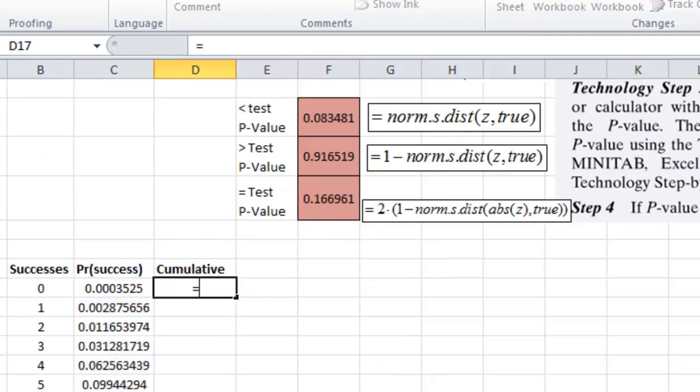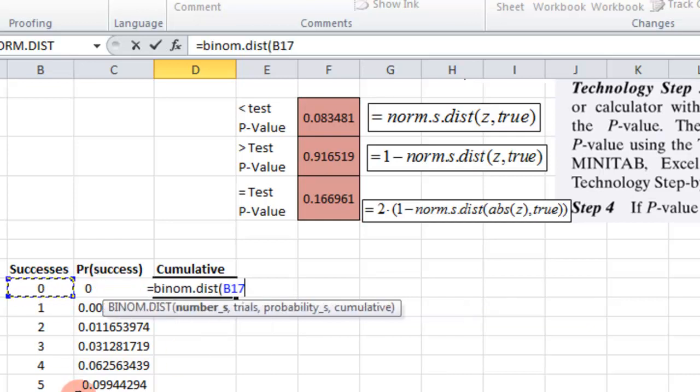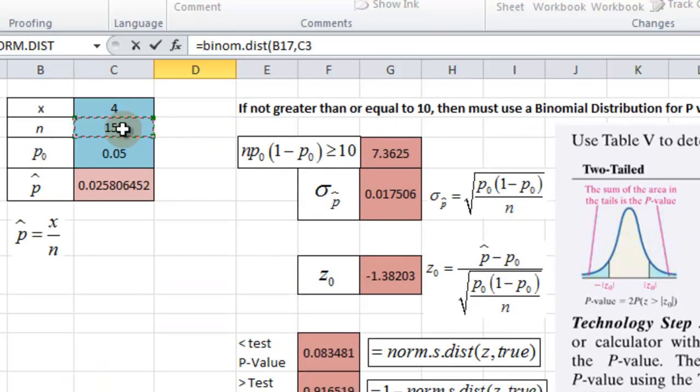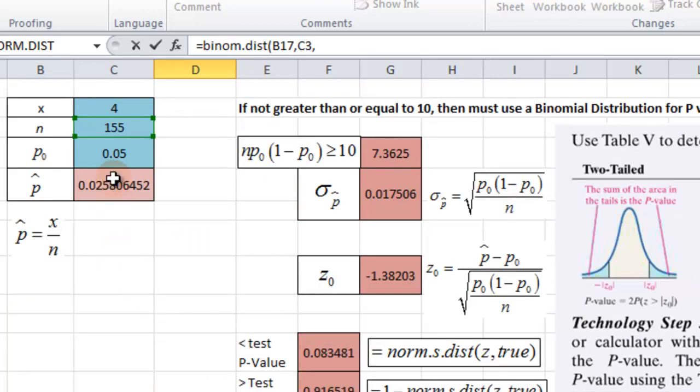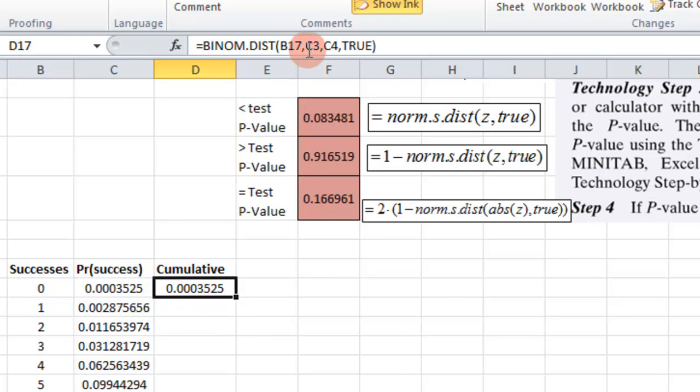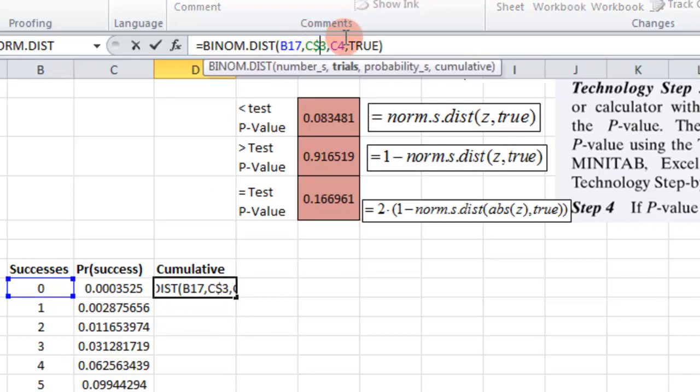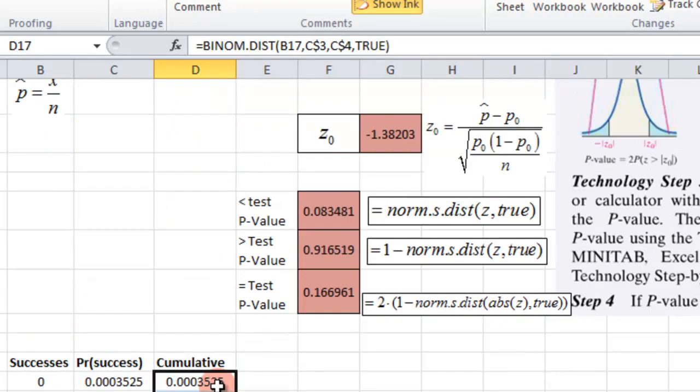The cumulative. Same thing. Binom.dist. The number of successes again, the trials, and we have the probability. And then this time we want true for our last thing for cumulative. Again, put the dollar sign on the C3 and the dollar sign on the C4. And grab and pull that down.